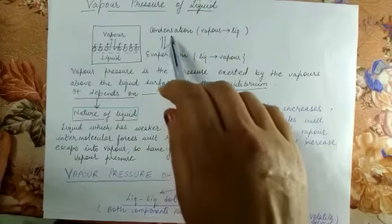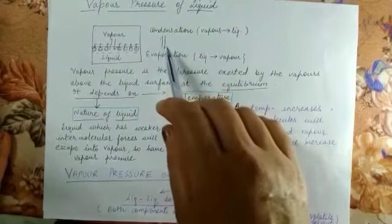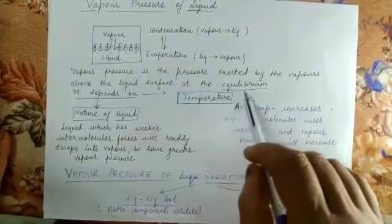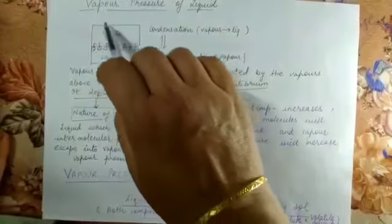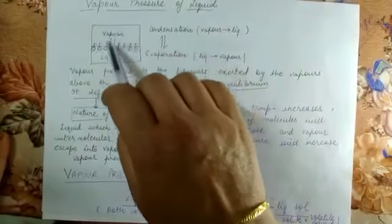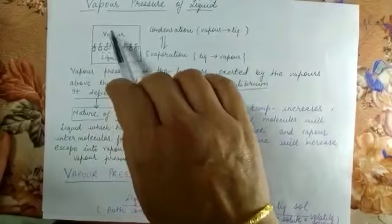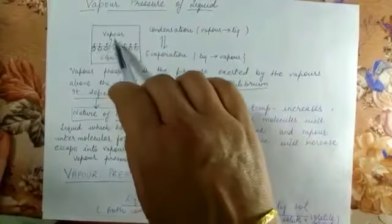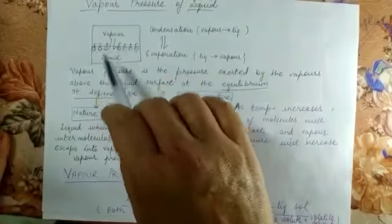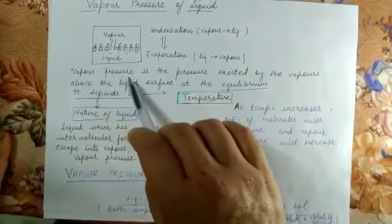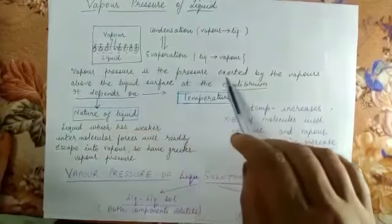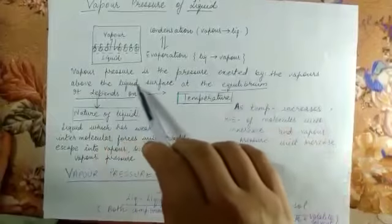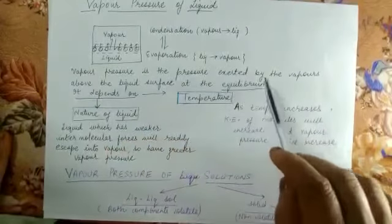But as time passes, both evaporation and condensation go on at an equal rate, and this condition is known as equilibrium. When equilibrium condition arises, the pressure exerted by the vapors above the surface of the liquid is known as vapor pressure. So vapor pressure is the pressure exerted by the vapors above the surface of a liquid at the equilibrium condition.